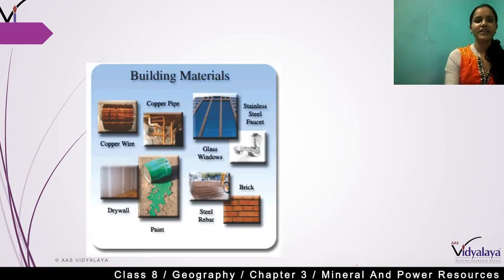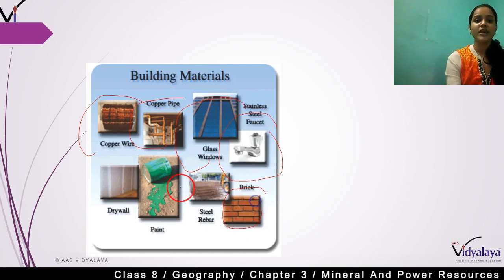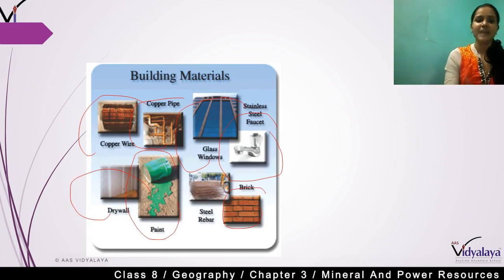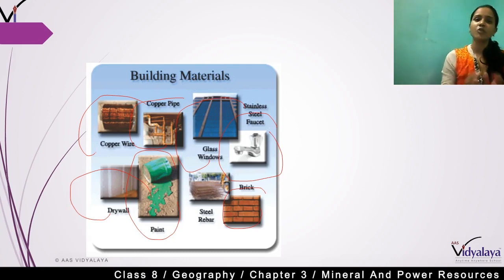Building materials also rely on minerals — for example, copper wire, copper pipe, glass windows, stainless steel faucets and taps, bricks, paint, and dry walls. You can see that different types of minerals are used in building materials, including copper, glass, brass, and paint.